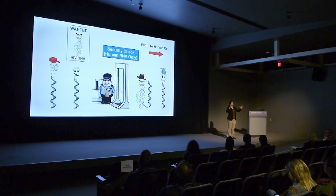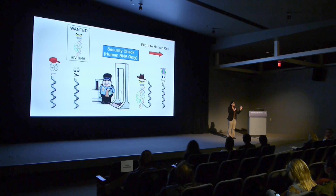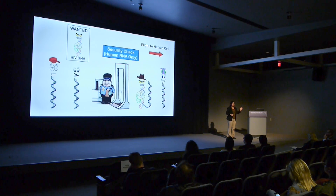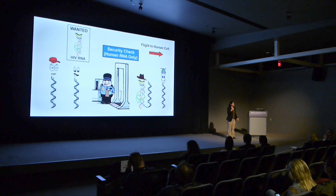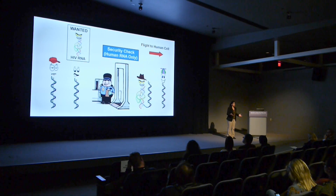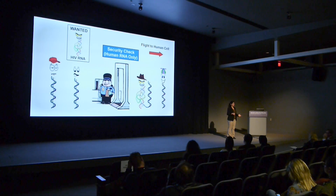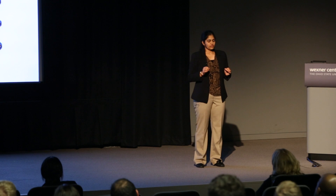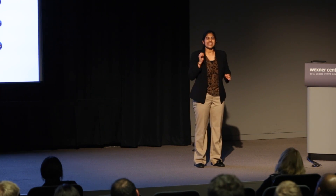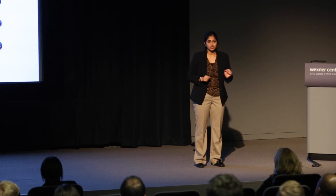The HIV RNA is huge, but within it, there is a region that does not change as easily as the other regions that are targeted by drugs. On closer inspection, we found that this region is able to trick a human protein into interacting with it. To understand how HIV was able to do this, we decided to look at the three-dimensional structure of this region.